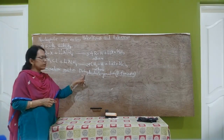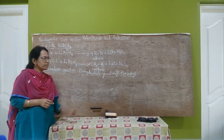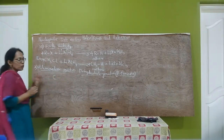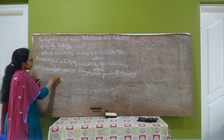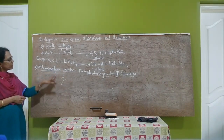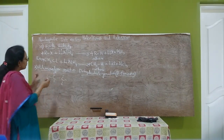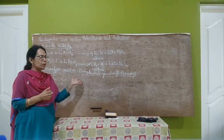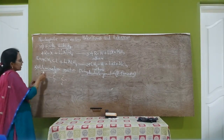When alkyl halides are heated with alcoholic potash, dehydrohalogenation takes place to form alkene. To show this, we need two carbon atoms because alkene contains C double bond C. We write one hydrogen and one halogen on the structure. Alcoholic potash is a base — a Brønsted base — which means it is a proton acceptor. Alcoholic potash accepts protons.